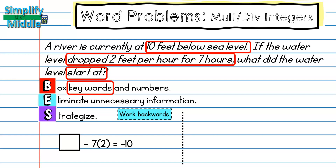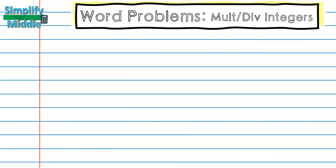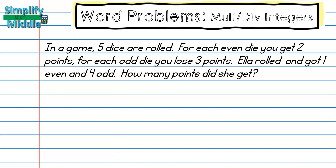Because if I'm at my ending point, I rise to get back to the start. My total is negative 10 plus 14 — I combined the seven and two by multiplying — which equals four. Restating: the water level started at four feet above sea level.